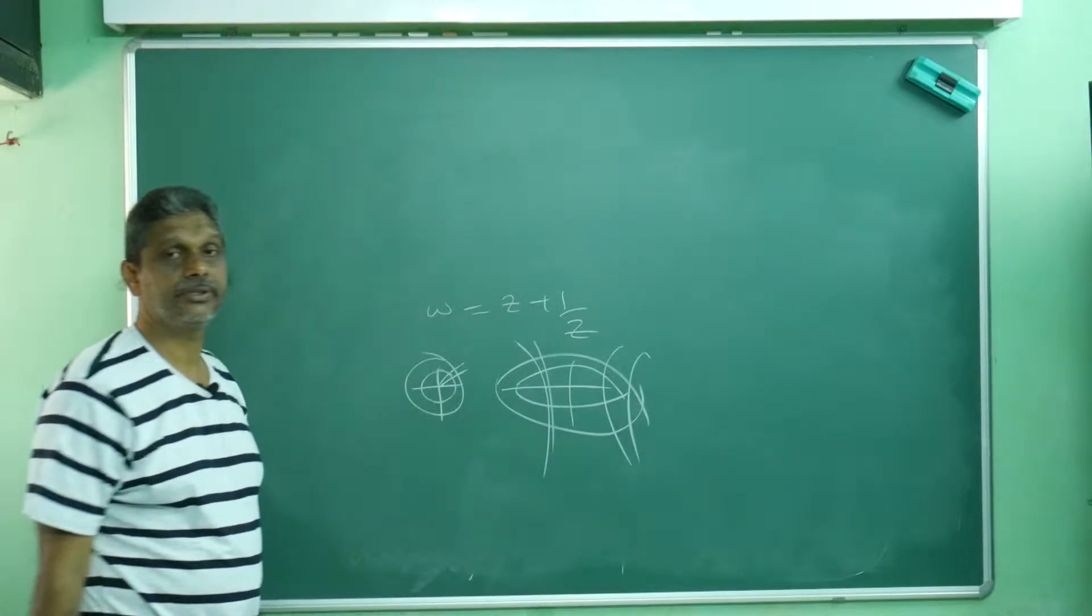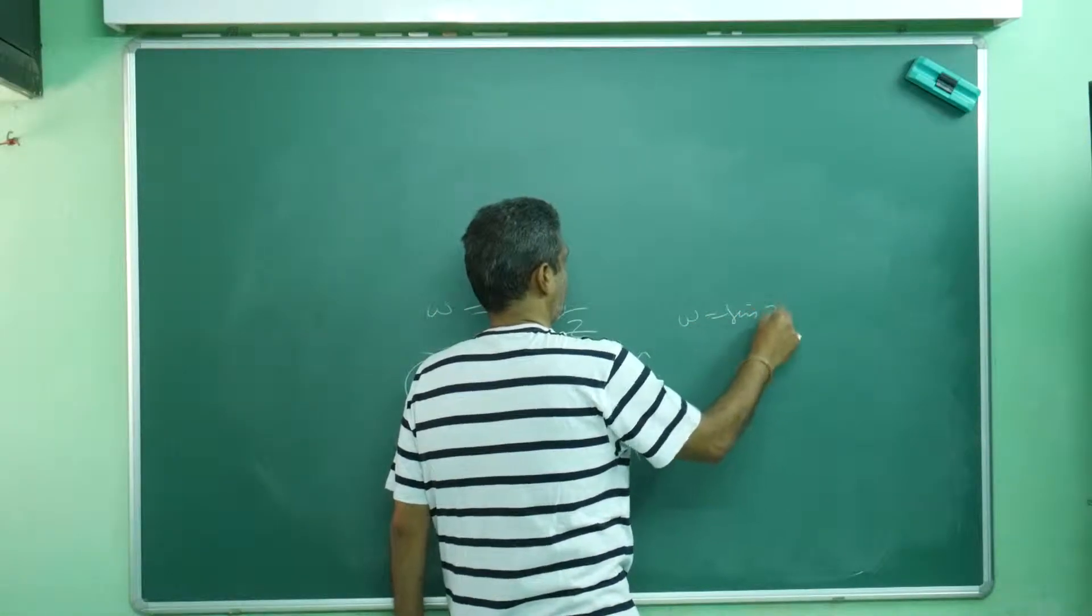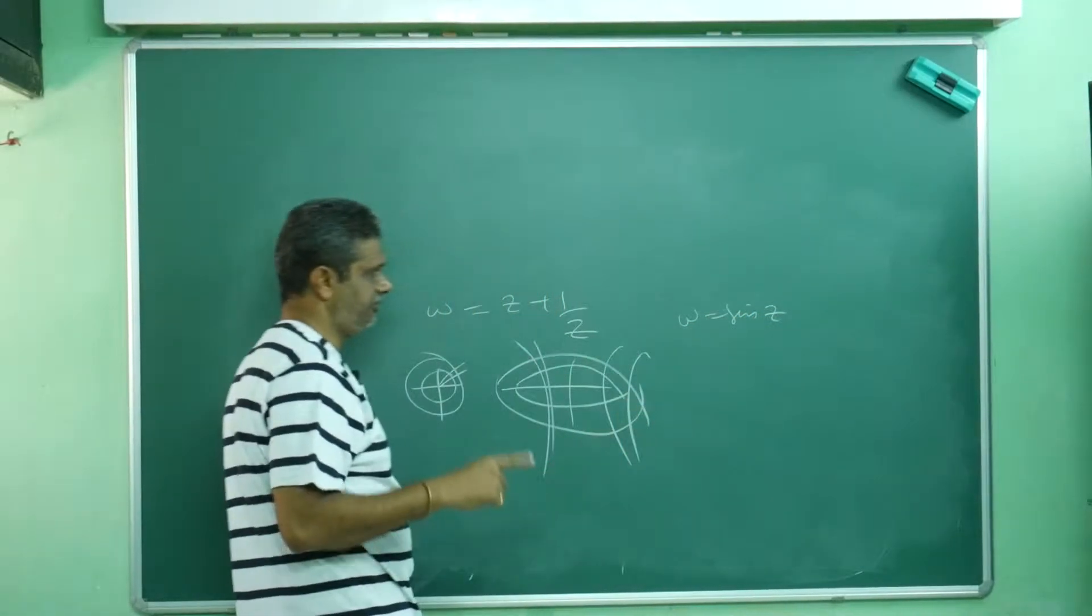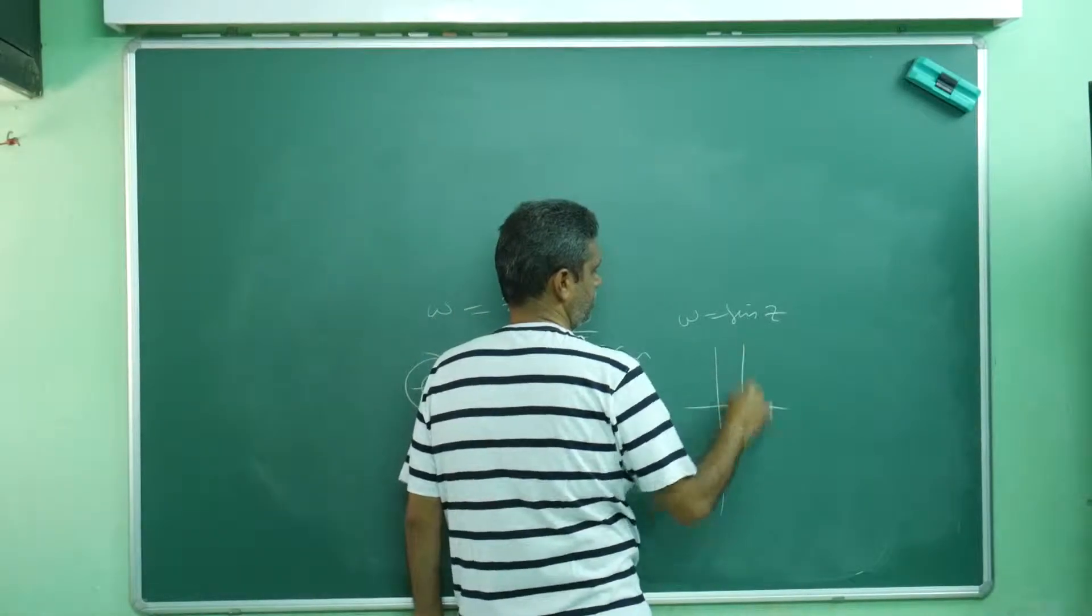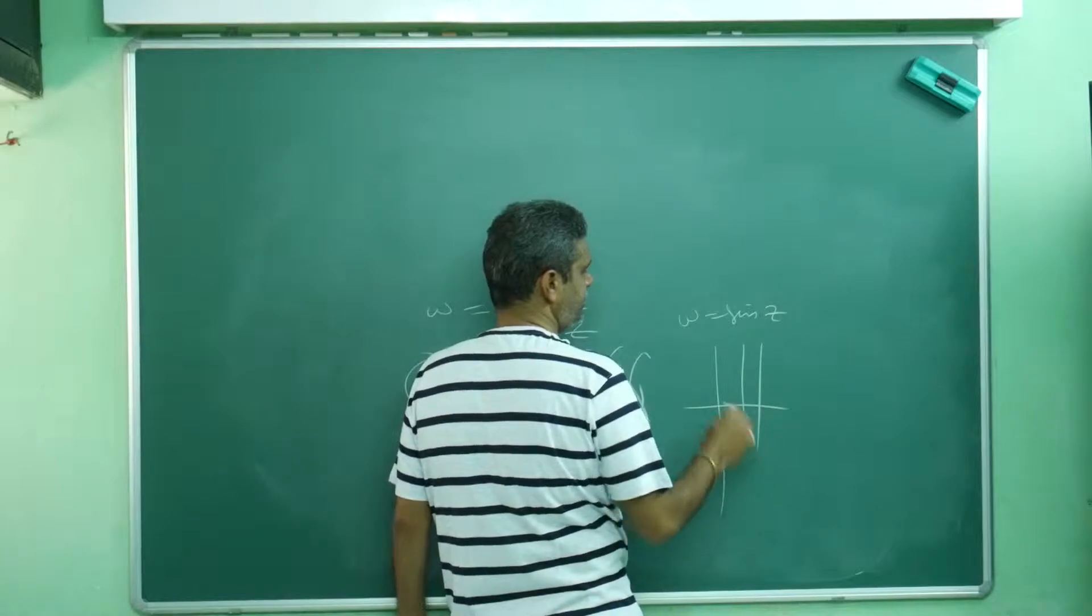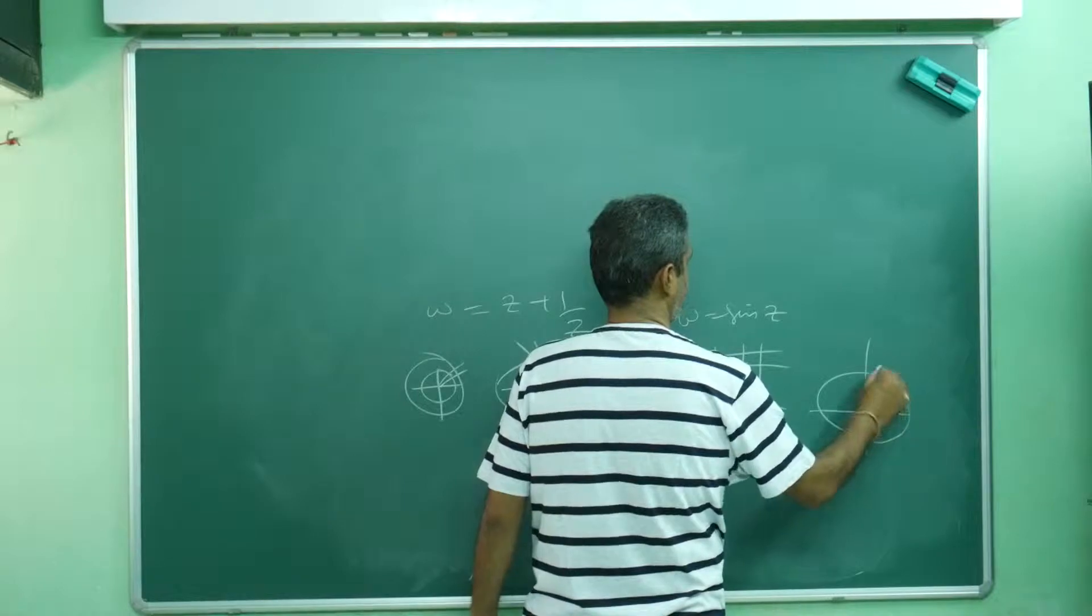Similarly, W equals sin Z. Actually, I don't know exactly. If I go inside only I can tell. This is also the same story. X equals constant, Y equals constant. If you see, we will get an ellipse, concentric ellipses and concentric hyperbolas.